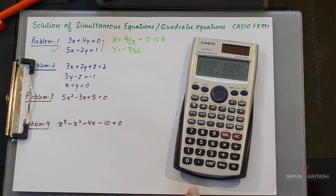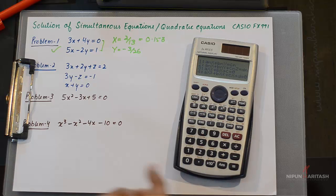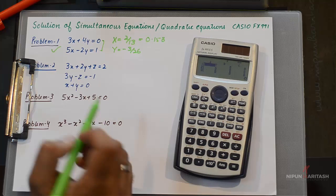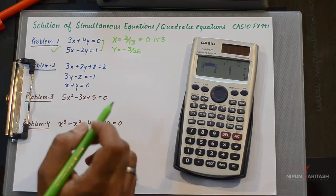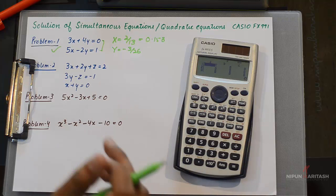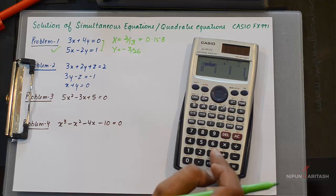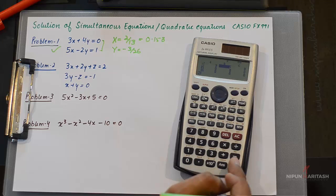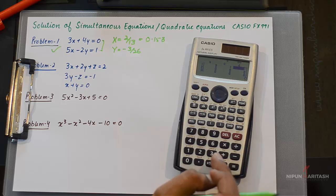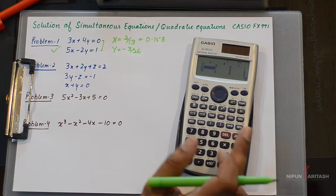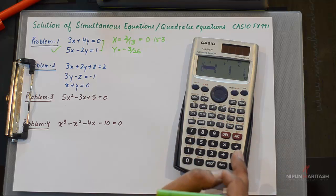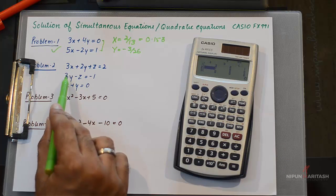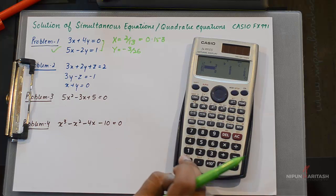Go back to MODE, press 5, then press 2, and we can start solving the second set of equations. Here we have three variables, so I'll start entering the coefficients: 3, 2, 1, and 2. D represents the constant. Now we need to be careful because the coefficient of X is 0 in the second equation, so we need